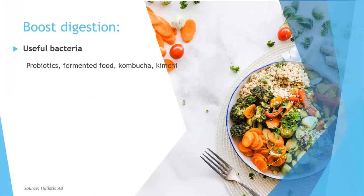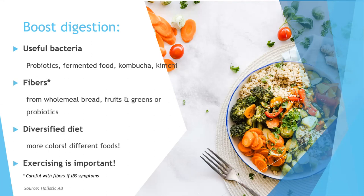You can boost your digestion with bacteria — buy probiotic supplements, make your own fermented food, or buy kombucha and kimchi, which create good bacteria in your intestines and help keep you healthy. Fibers: you can buy prebiotics, which are food for the bacteria, or get them from wholemeal breads, fruits, and greens. But if you have a lot of stomach problems — bloating, pain — start with probiotics first, because adding fibers can be too much for your body to digest and may worsen symptoms. Eat as diversely as possible — the more colors, the healthier your gut flora.